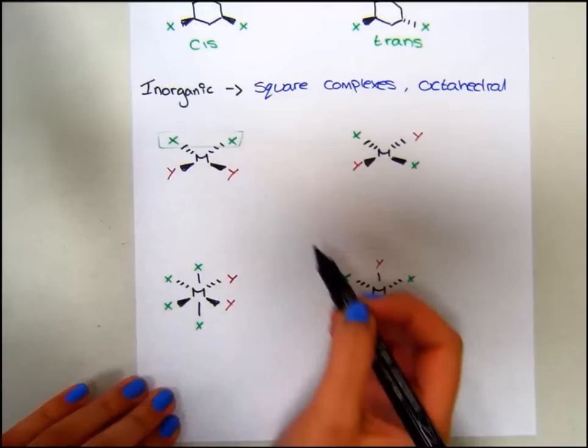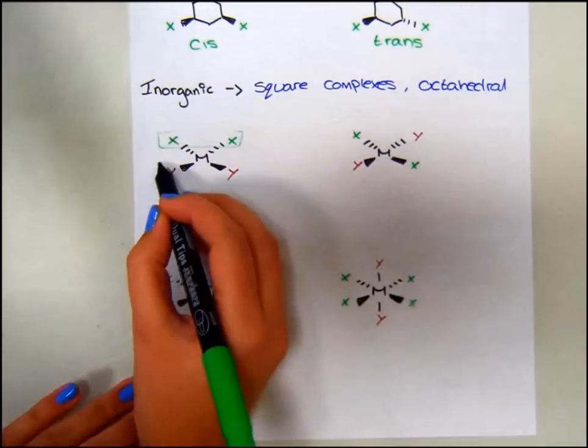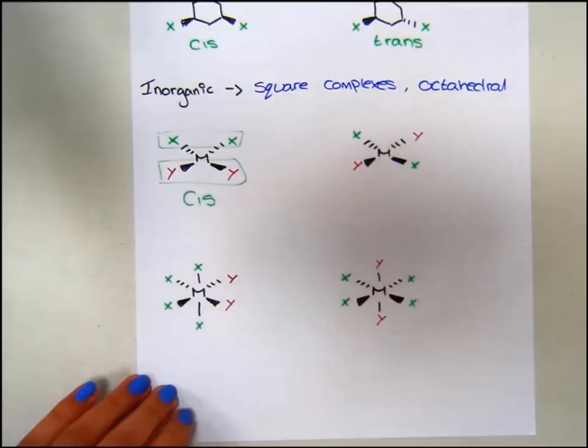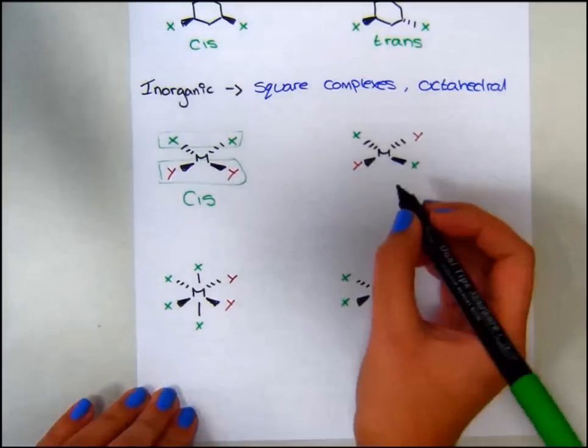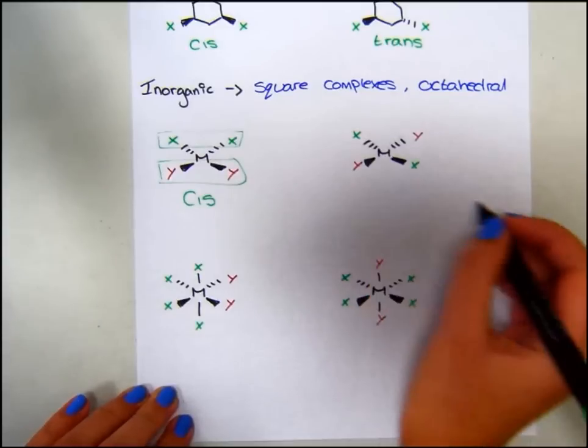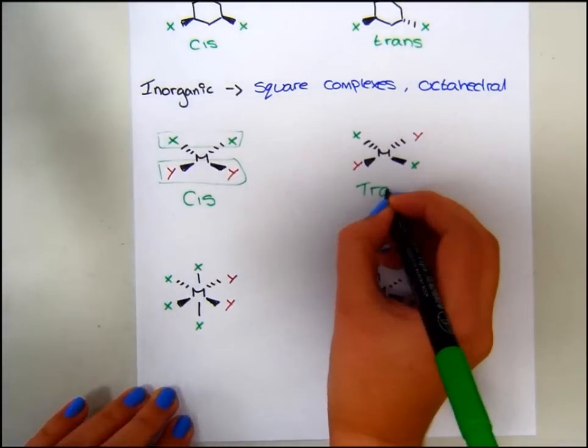Because the X's are on the same face, and the Y's are on the same face, we would label this as cis. Whereas for the second one, neither of the substituents are on the same face as each other, therefore they are trans.